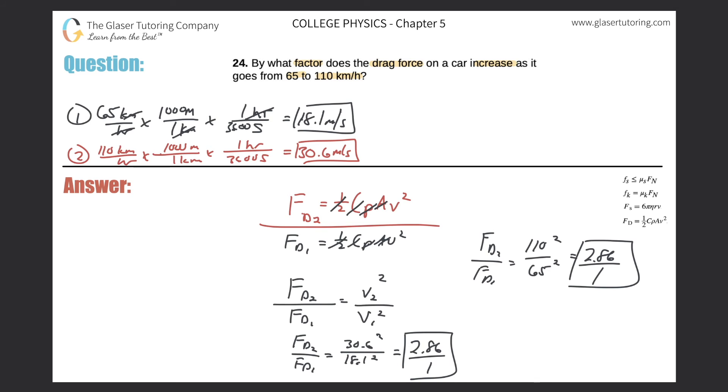All right, so notice the interesting part is that the velocity, if I just look at the velocities without squaring them, the velocities simply increased by this ratio. 110 to 65 is 1.7, well, 1.69. So the velocity only increased 1.69 times, but the drag force increased almost three times.